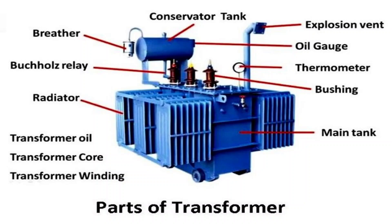Next, we have the transformer core. The core is made of laminated silicon steel and serves as the magnetic circuit of the transformer, providing a low-reluctance path for the magnetic flux. The core's design minimizes energy losses — that is, hysteresis and eddy currents — making the transformer more efficient.